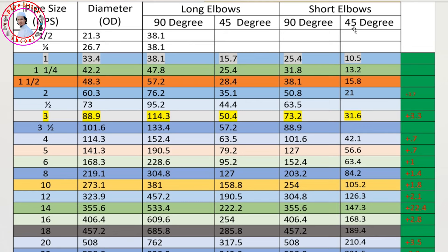The 90-degree long elbow — the short dimension is 1x. And for the 45-degree, the dimension is 2x. So we need to look at this side of the line.